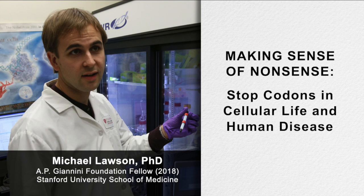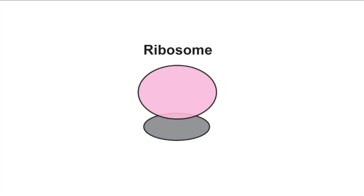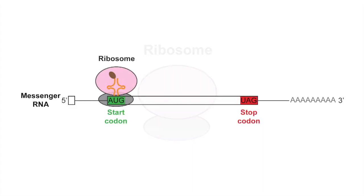My name is Michael Lawson. I'm a first-year Giannini fellow in the Puglisi Lab here at Stanford. All biological organisms use tiny molecular machines called ribosomes to orchestrate the assembly of the many proteins that are required for cellular life. To complete this complex task, ribosomes use molecules called messenger RNAs as the blueprints for protein synthesis.